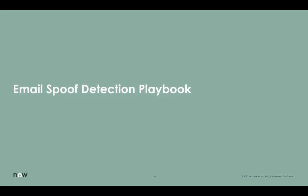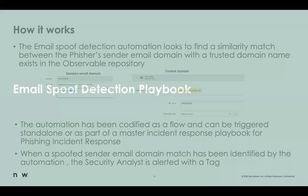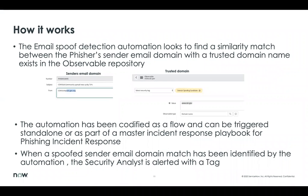The email spoof detection playbook enables incident response teams to be on the alert for any potential spoofing attempt on trusted brands that may be going on as part of the incoming submission. The playbook looks to find a similarity match between the sender's email domain and any observable deemed as a trusted domain by the organization. This playbook has also been built as a flow using Flow Designer and can be triggered to run automatically, with the ability to alert the analyst when a possible spoofing attempt has been uncovered.